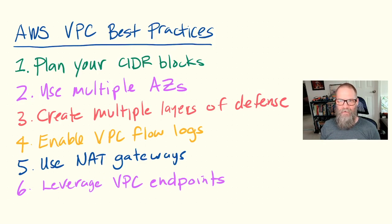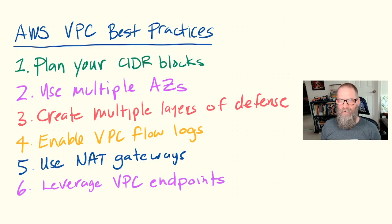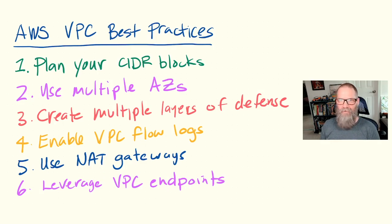A VPC is a regional service. You want to make sure to build highly available, fault-tolerant solutions in AWS — that your VPCs span multiple availability zones or AZs in the region where you deploy that VPC. The way that you span multiple AZs with your VPC is to spread your subnets across those AZs when you're creating the VPC. So make sure that you are selecting multiple AZs to build out highly available solutions.